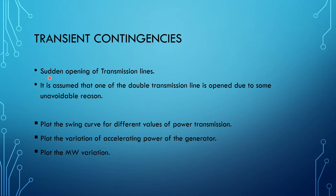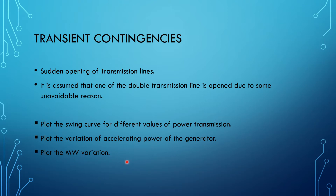The contingency is a sudden opening of one transmission line. It is assumed one of the double transmission lines is opened due to some unavoidable reason. After opening, we study how the system reacts — whether the system is stable or goes to an unstable state. We are going to plot the swing curve for different values of power transmission, the variation of accelerating power Pa, which is the difference between mechanical power and electrical power, and the megawatt variation of power flowing from the generator to the infinite bus.